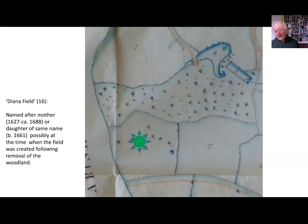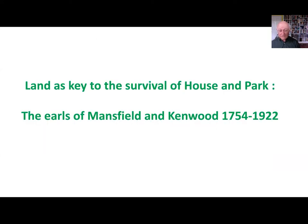Anyway, there is a lasting link to the Bills in the name of that little meadow, which is now rapidly reverting back to woodland. And now we turn to the third example of the use of the land in the context of Kenwood — and this time, it's land as the key to survival of the house.